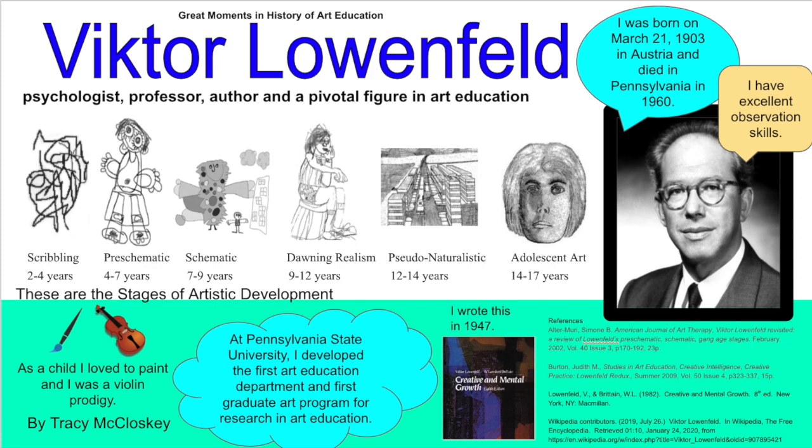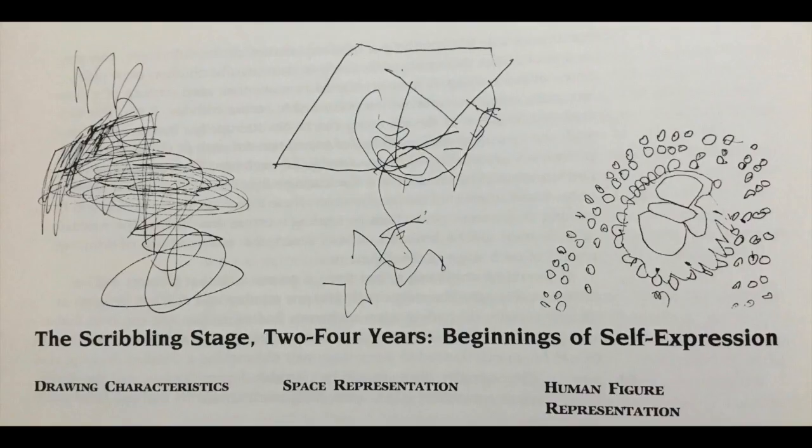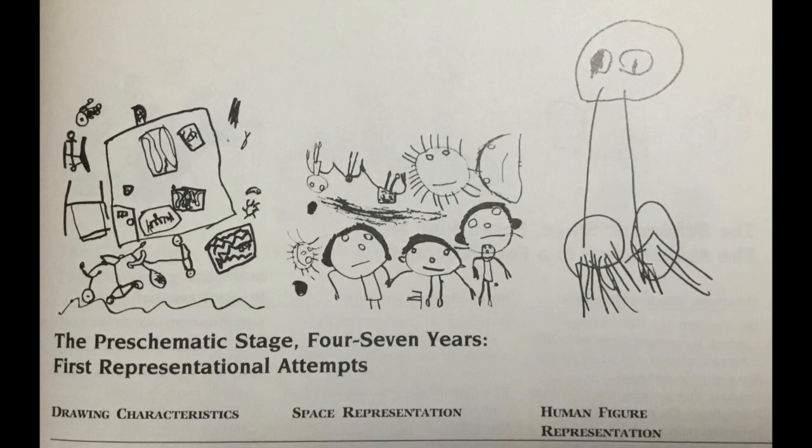Victor Lowenfeld's developmental stages in art — scribbling stage, pre-schematic stage, schematic stage, dawning realism, pseudo-naturalistic, and adolescent age — were his most notable contribution to the world of art education. He also firmly believed art instruction at every level should be filled with opportunities for creative and mental growth.